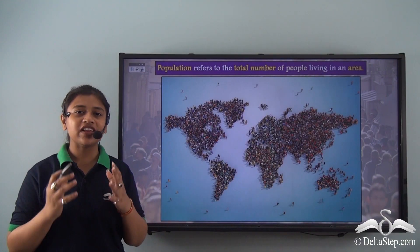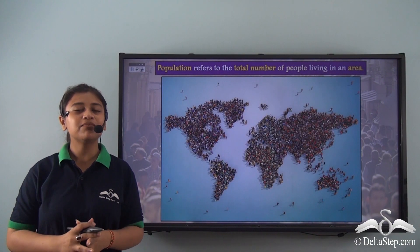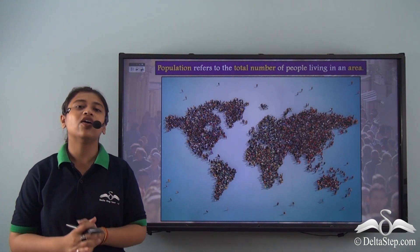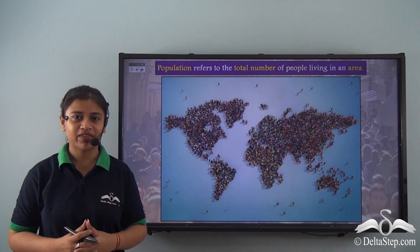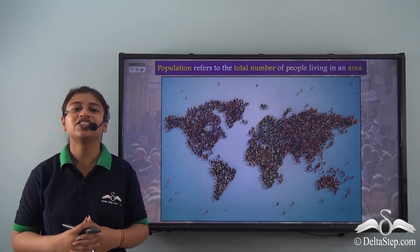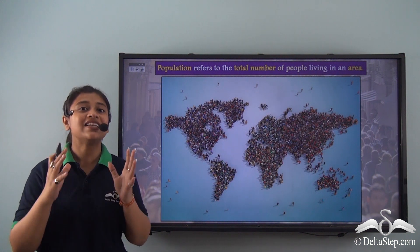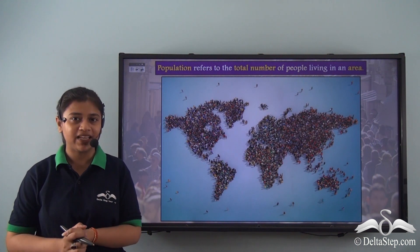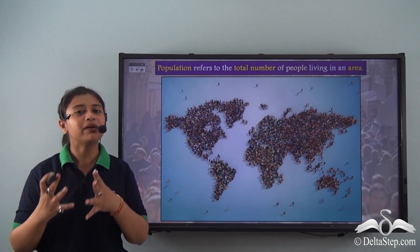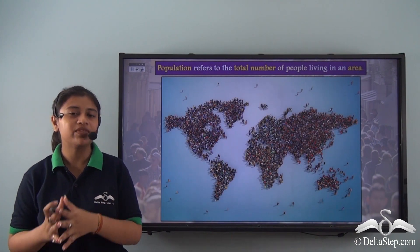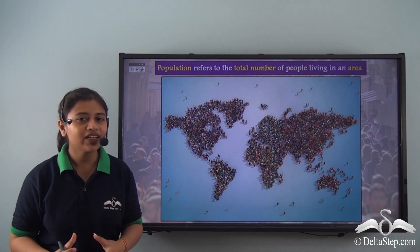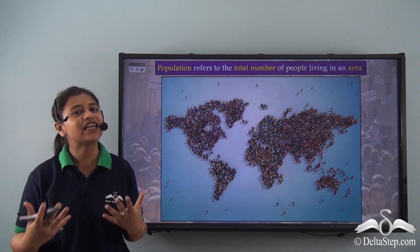Say for instance, your relatives have come to your place to stay for a certain period of time because their house is being renovated. So initially there were 5 members staying at your home but now there are 9 members staying at your place after your relatives have come in. So you can say that the number of people living at your home now has increased, or in other words the population at your home has increased.